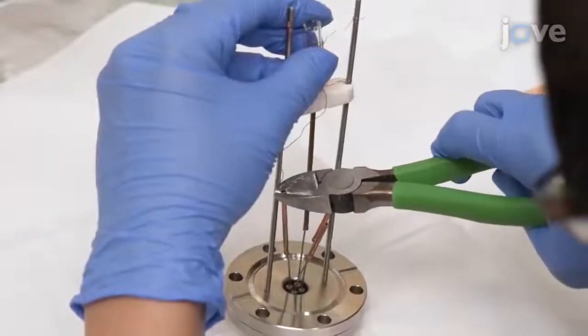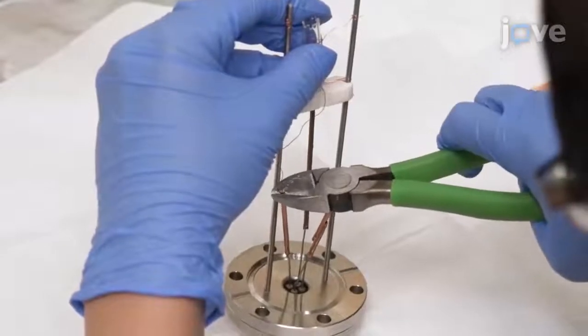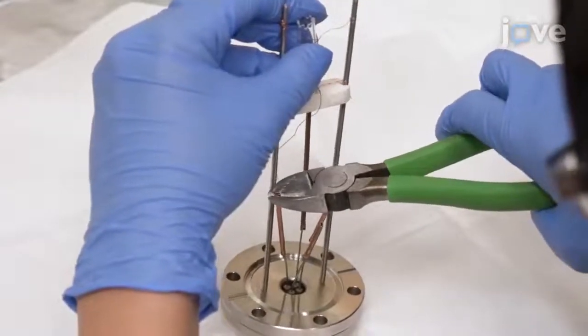Insert the wire from the top of the spring into the short hollow copper rod coupled with the long rod. Pinch the top of the rod shut around the wire.